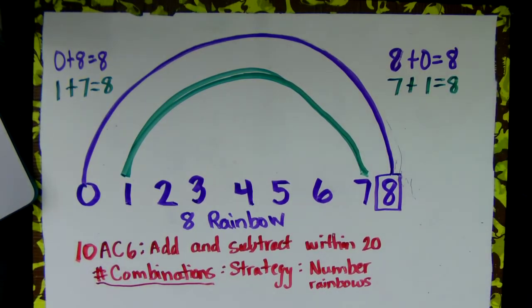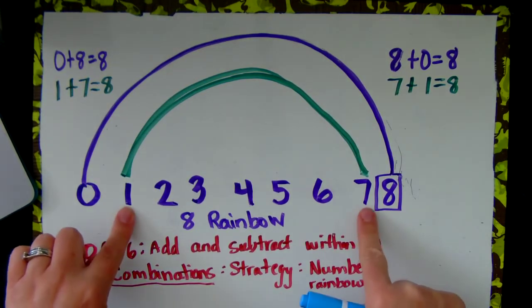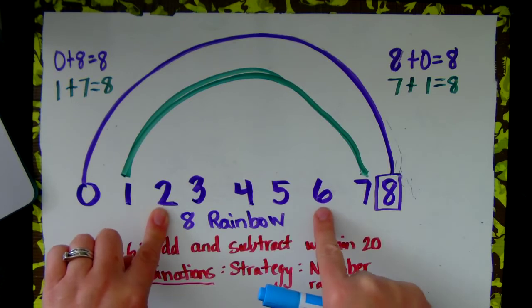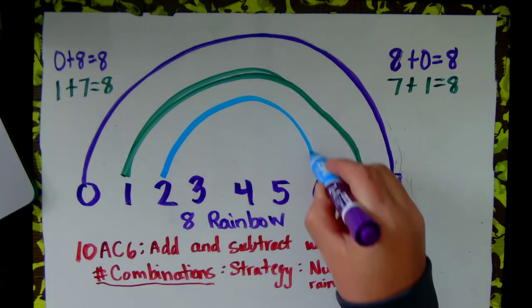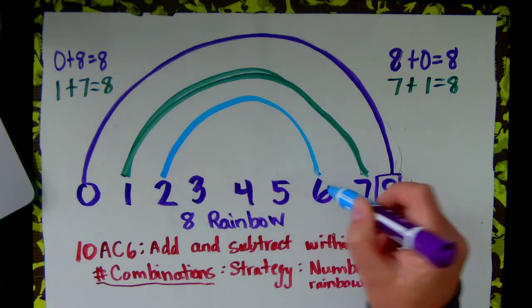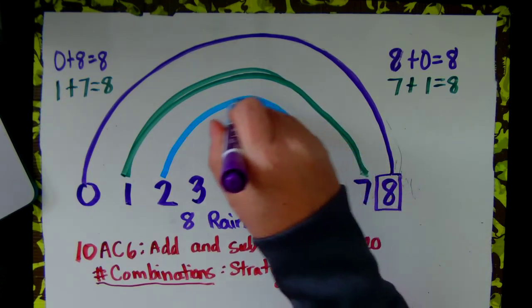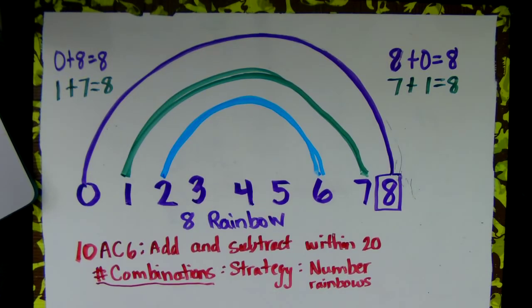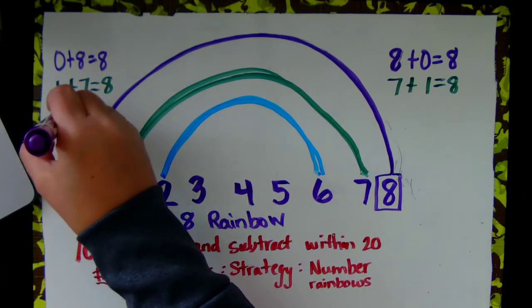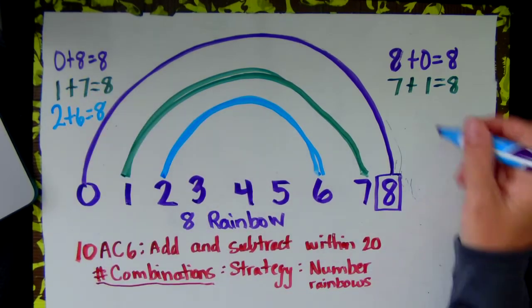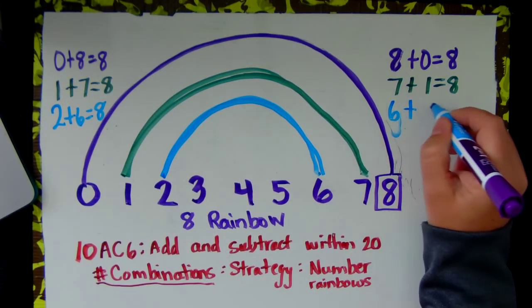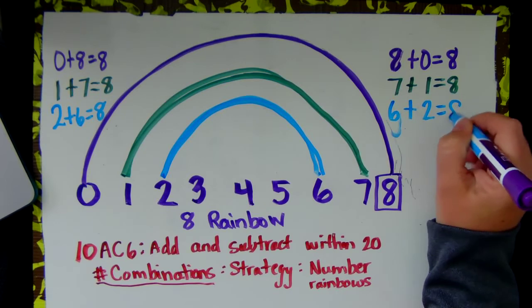Now we are going to move from 1 and 7 to 2 and 6. 2 and 6 make 8. 6 and 2 make 8. 2 plus 6 equals 8. 6 plus 2 equals 8.